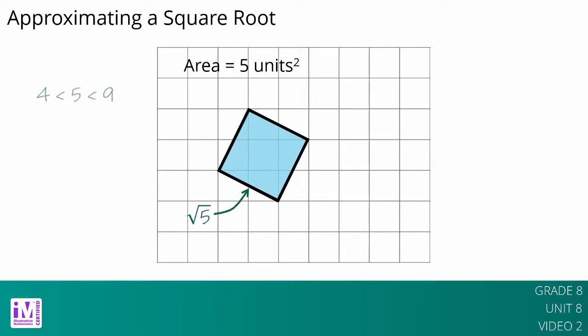Notice that 5 is greater than 4, but less than 9. That means that the square root of 5 is greater than 2, but less than 3. This makes sense because we already saw that the length of the segment is in between 2 and 3.